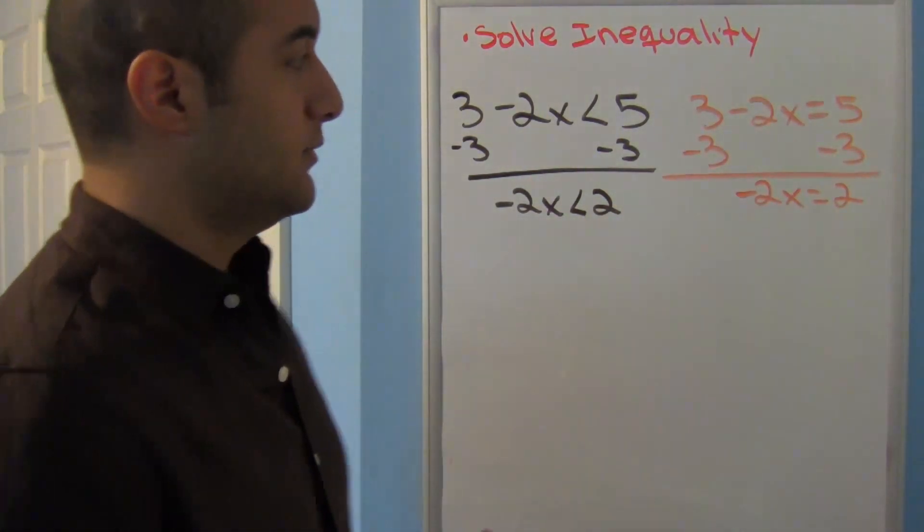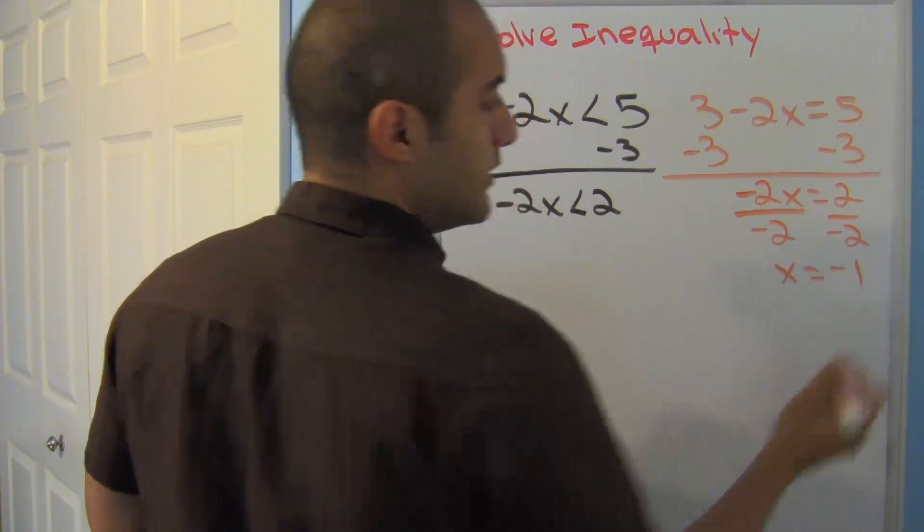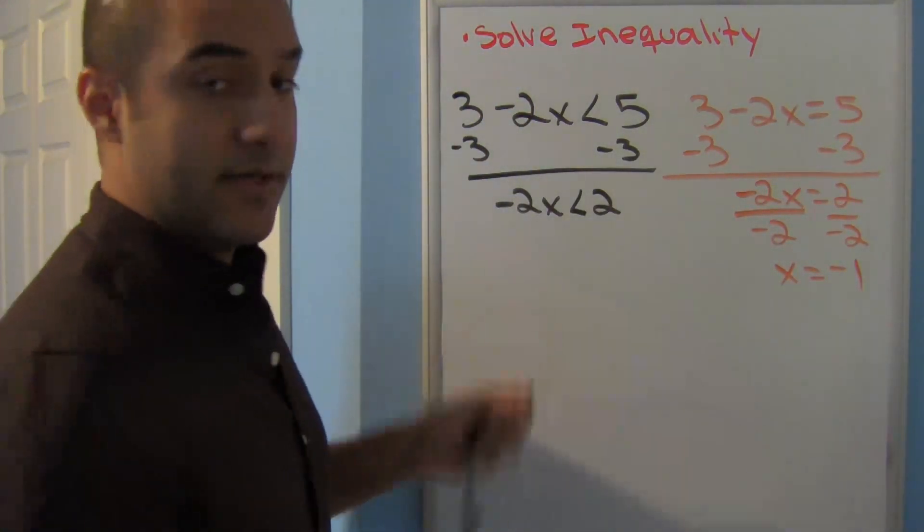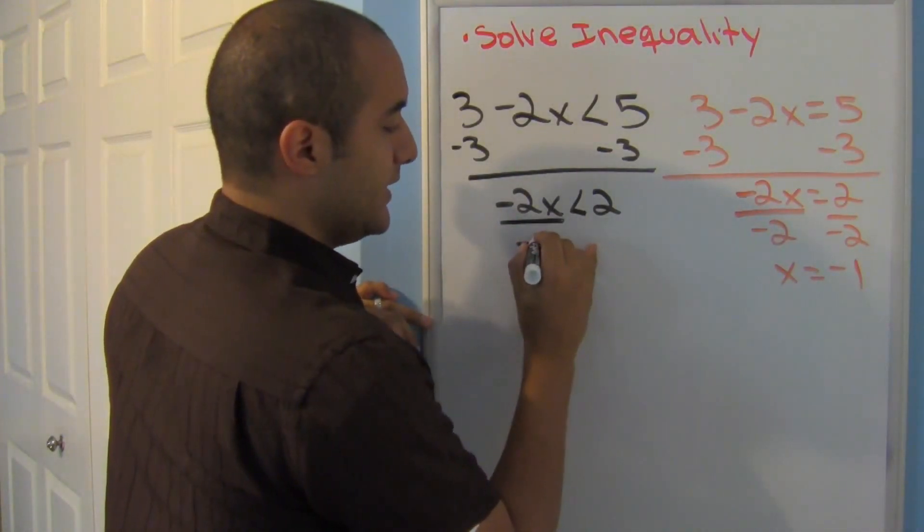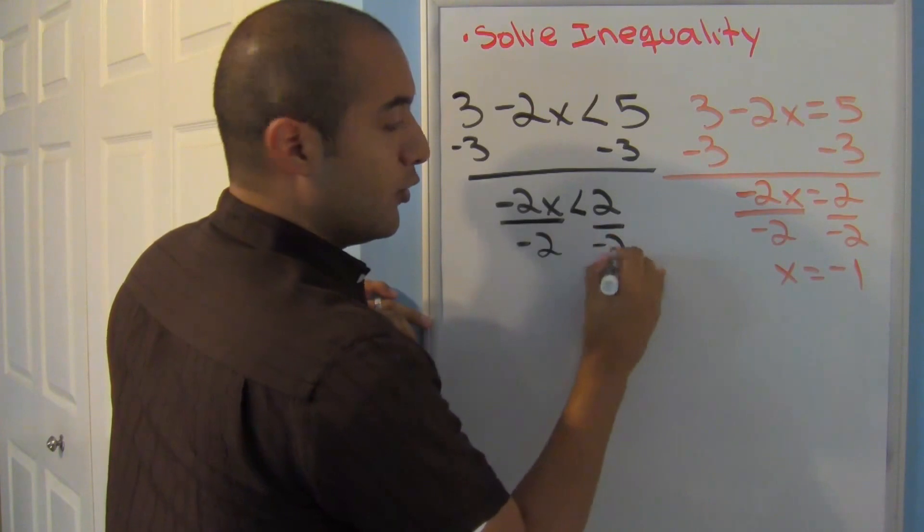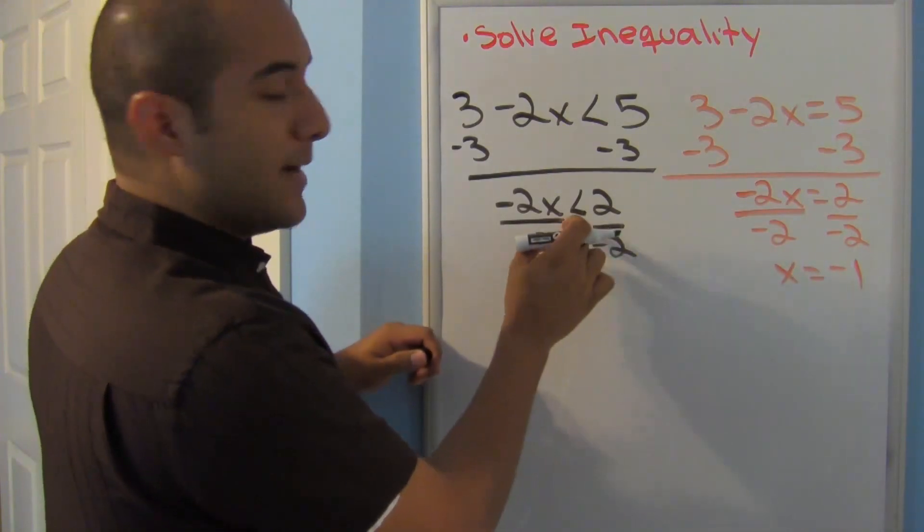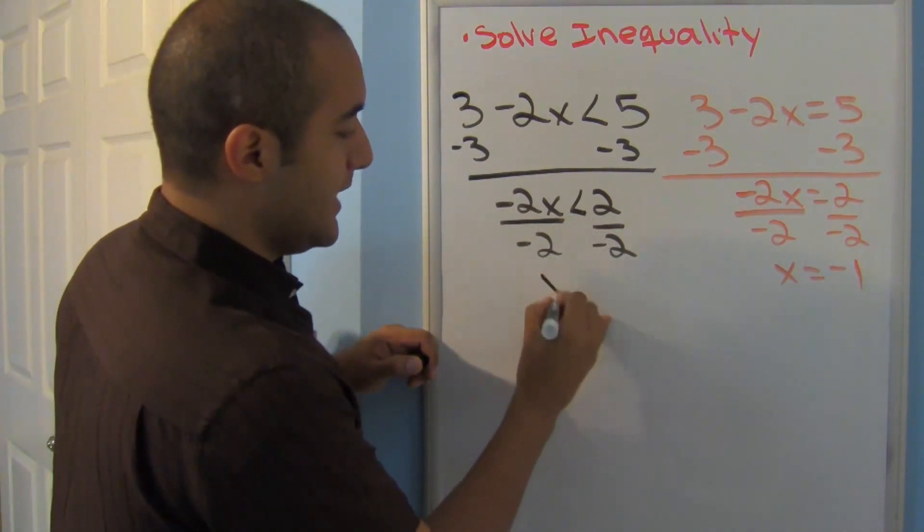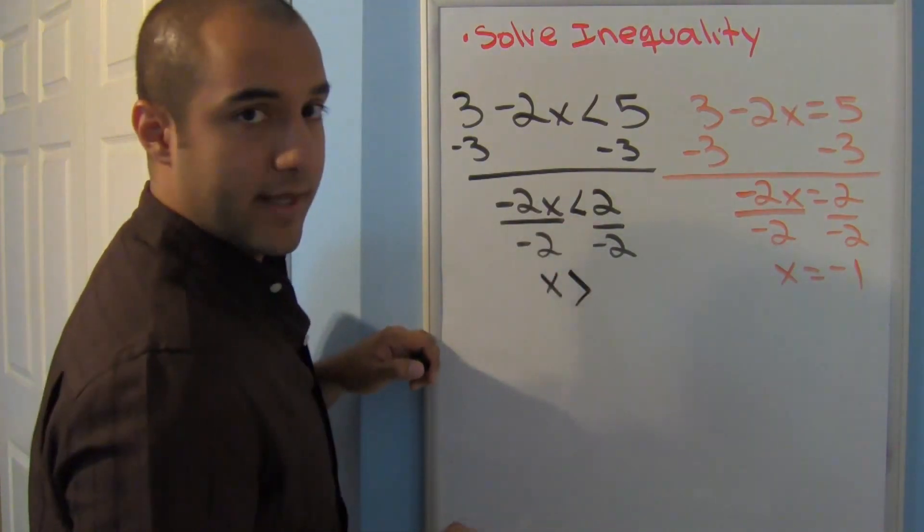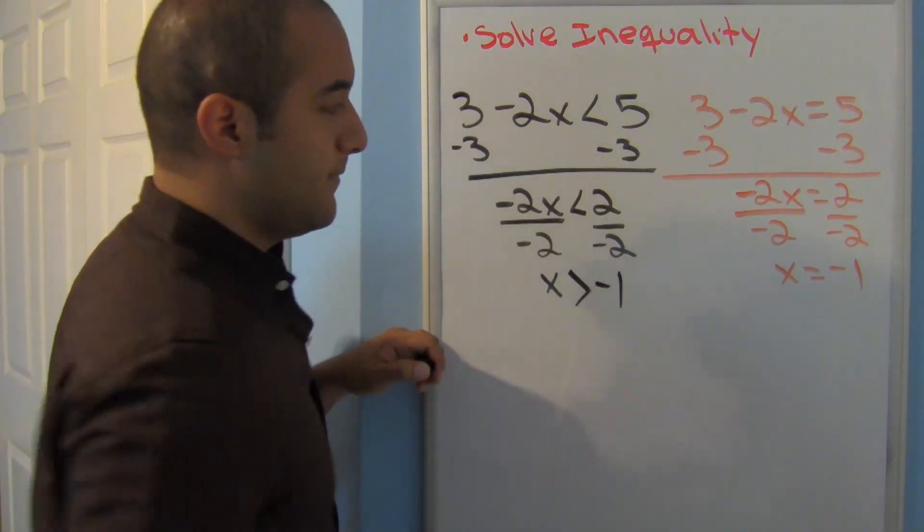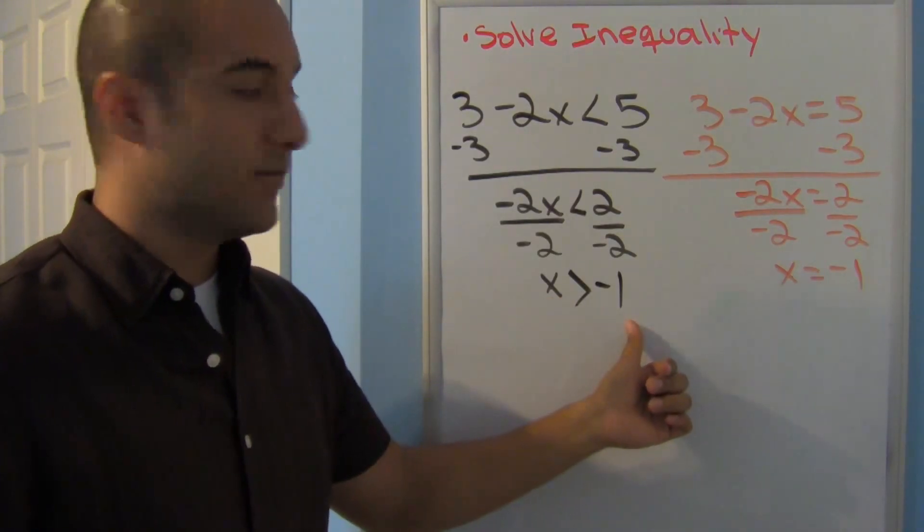Here I would divide negative 2 on both sides by itself, so x is equal to negative 1. Here something special happens though. Whenever you divide or multiply both sides by a negative number, something special happens to that sign. First I'll bring down that x, but instead of a less than, this will become a greater than. Your sign gets flipped. This is your answer: x is greater than negative 1.